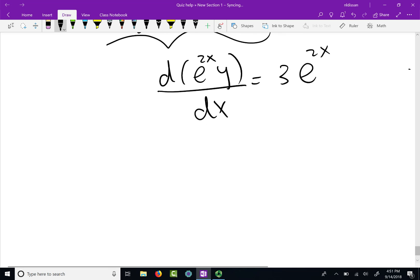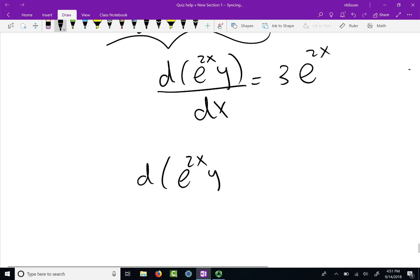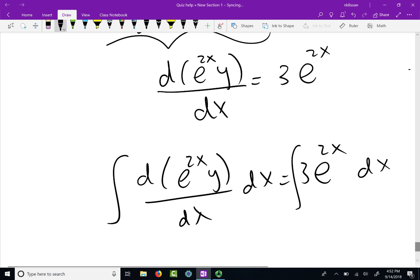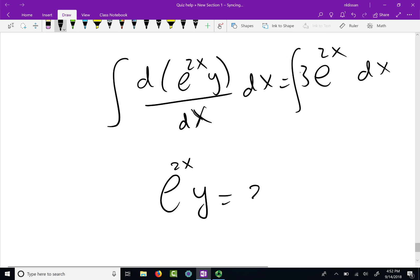Now we multiply both sides by dx, 3 e to the 2x dx, and then we do an integration. So if you do the integration here, I explain this. If you do the integration on the left-hand side, you wind up with e to the 2x times y. Now on the right-hand side, once you do the integration, 3 times the integral of e to the 2x is e to the 2x over 2 plus c.